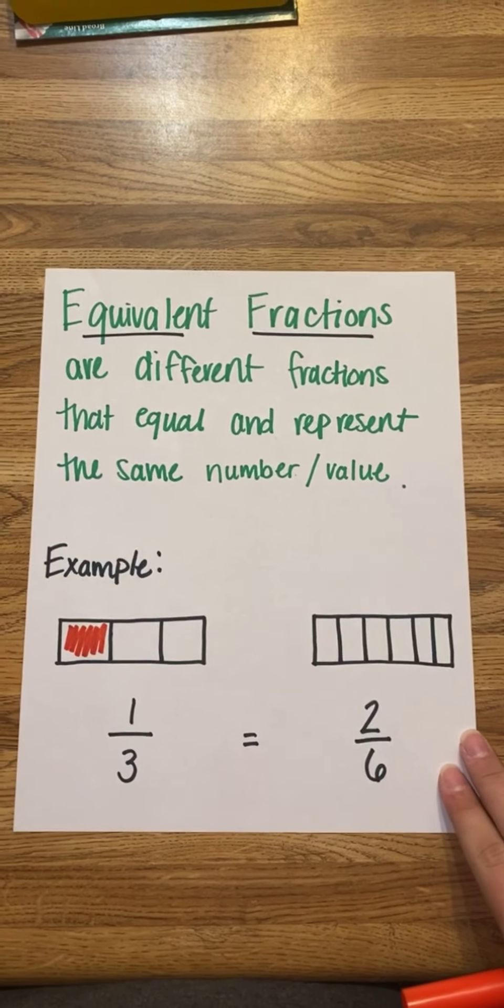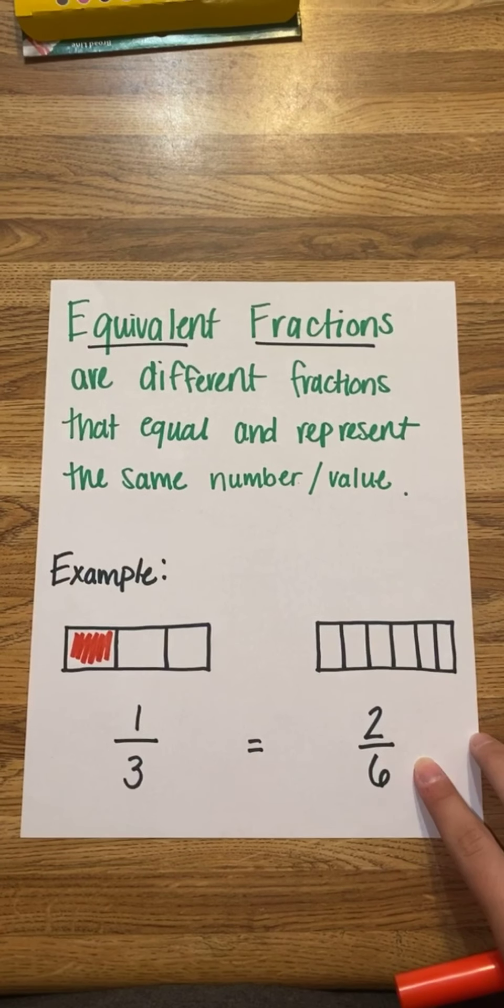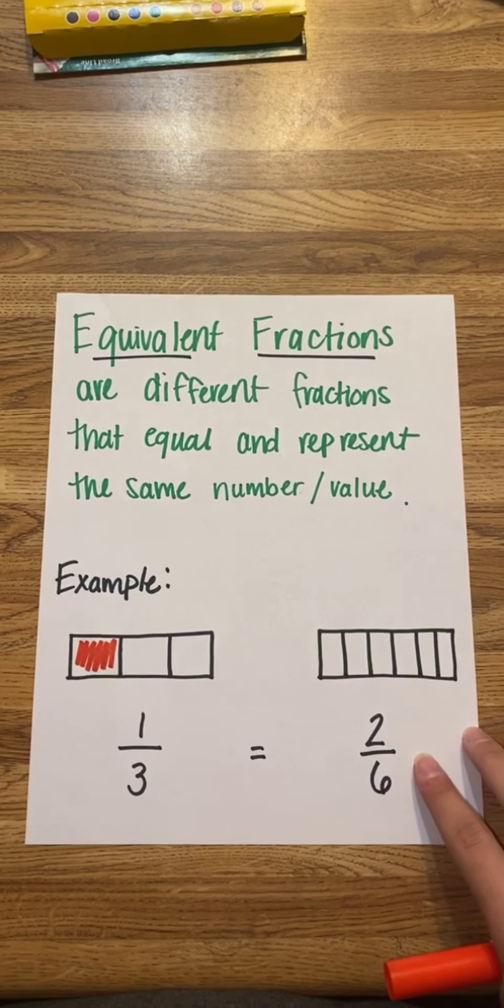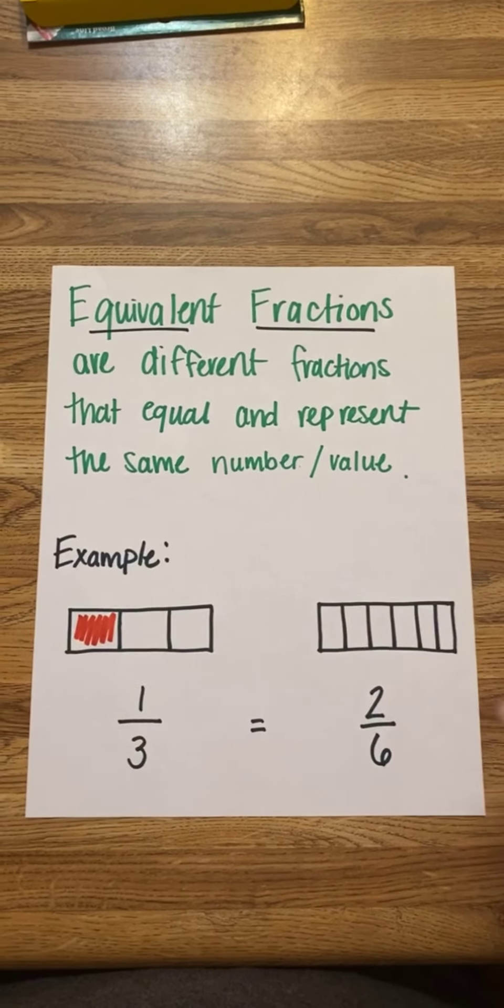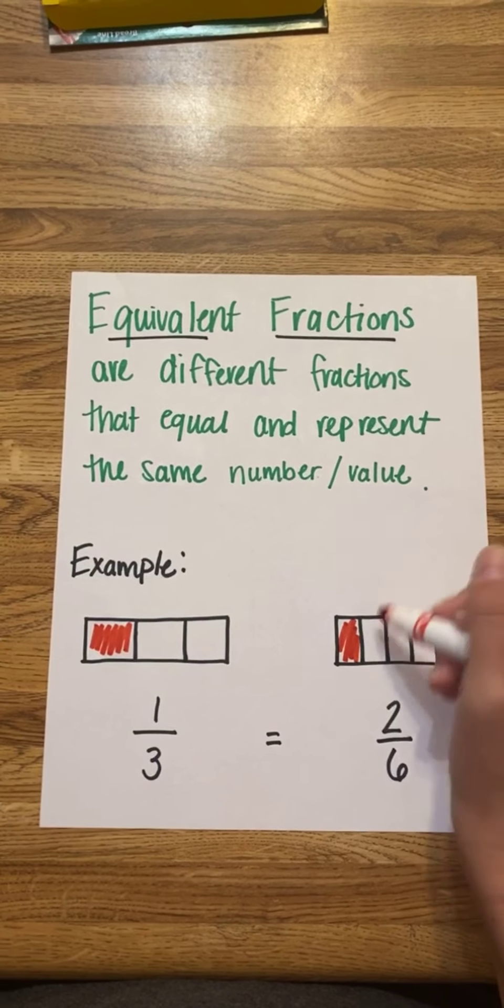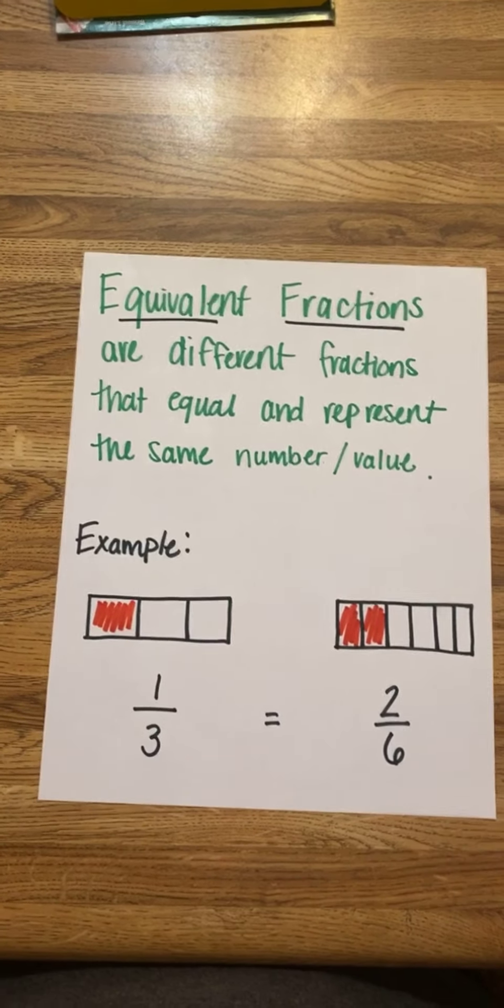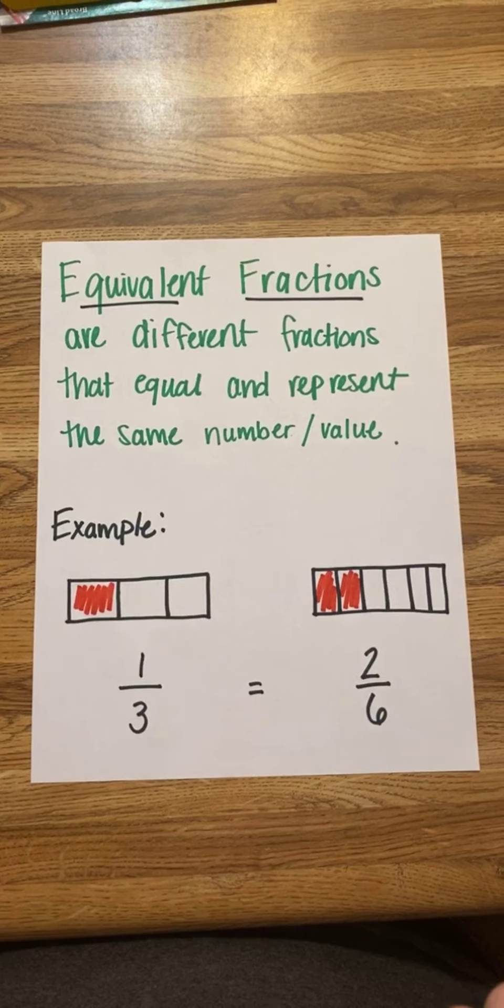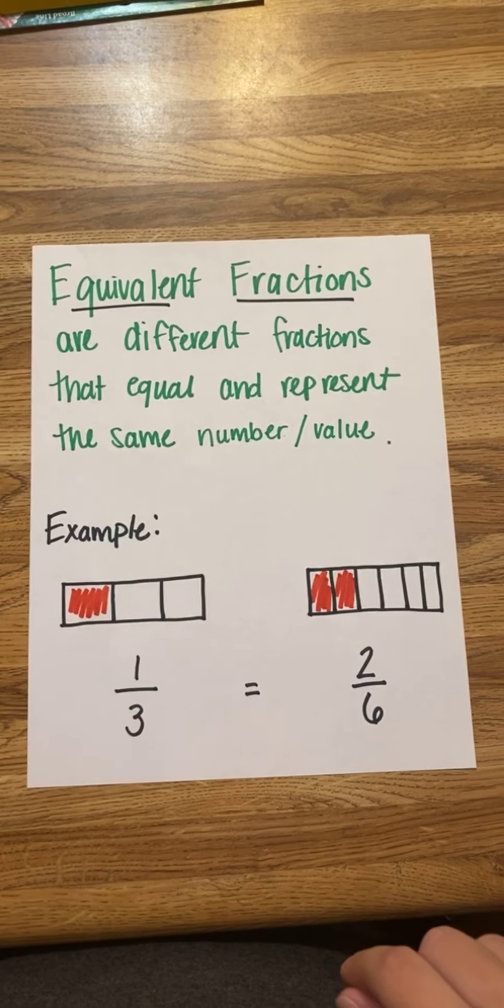Now with 2/6, we have 6 total pieces and 2 pieces that are shaded. So even though we have 2 different fractions, both of these fractions equal the same amount.